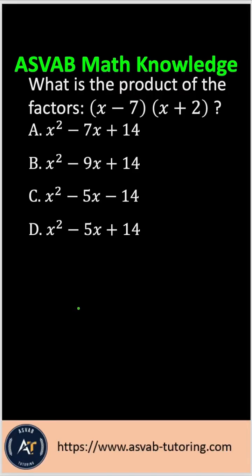Let's practice this very common math knowledge question for the ASVAB PICAT, CAT-ASVAB, AFQT, AFCT, and ASVAB GT. The question asks: what is the product of the factors (x - 7)(x + 2)?